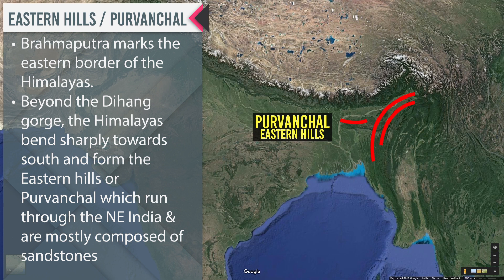Brahmaputra marks the eastern border of the Himalayas. Beyond the Dihang Gorge, the Himalayas bend sharply towards the south and form the Eastern Hills or Purvanchal, which run through north-east India and are mostly composed of sandstones. These hills comprise the Mishmi Hills, Patkai Hills, Naga Hills, Manipuri Hills, and Mizo Hills.